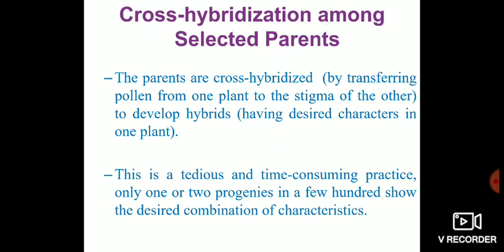The next step is cross hybridization among the selected parents. Cross hybridization is done by transferring pollen grains from the anthers of one variety to the stigma of another variety, allowing cross pollination, and finally fertilization takes place. This results in the formation of seeds containing hybrid embryos, and these hybrids possess the desired characters of both plants combined in a single plant.